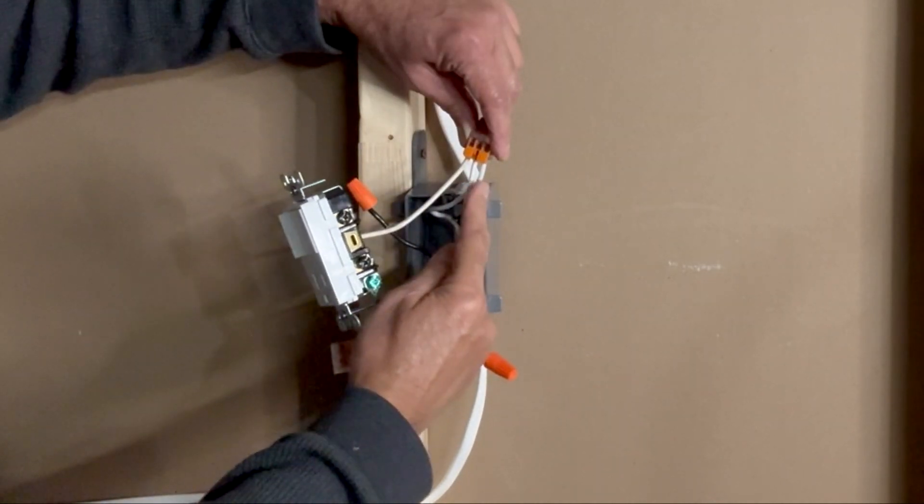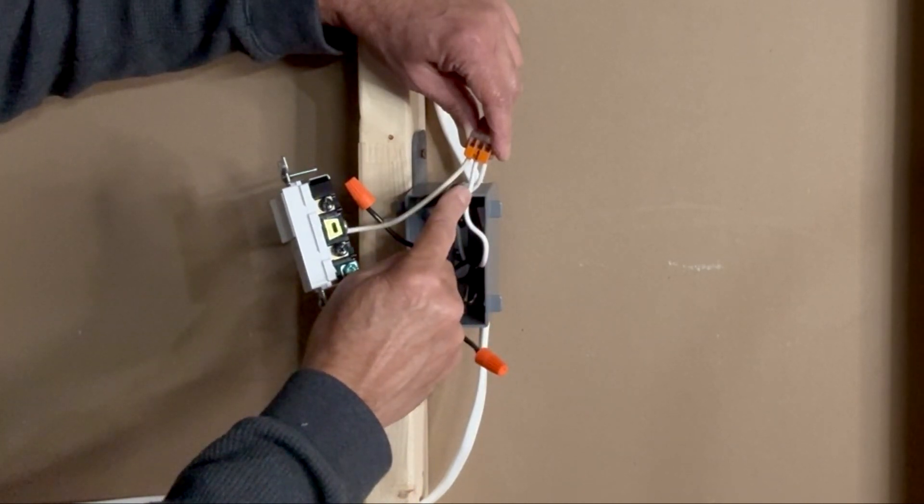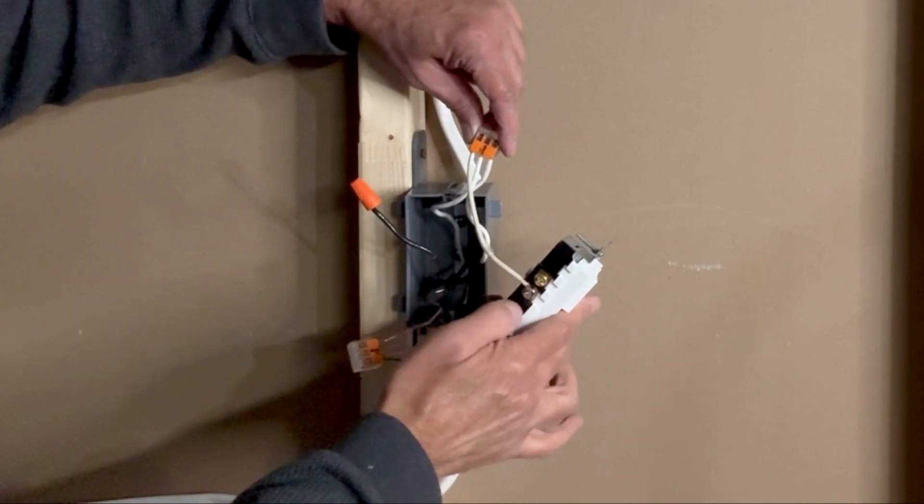These are three white neutral wires. White neutral coming from power in, white neutral going to the light fixture and white neutral pigtail which is connected to the silver screw here.